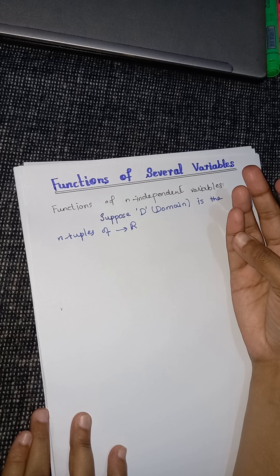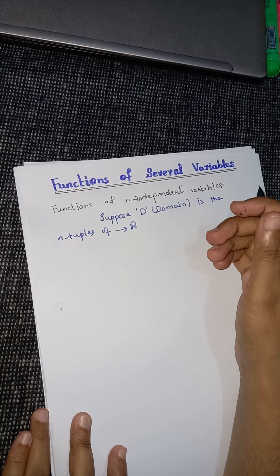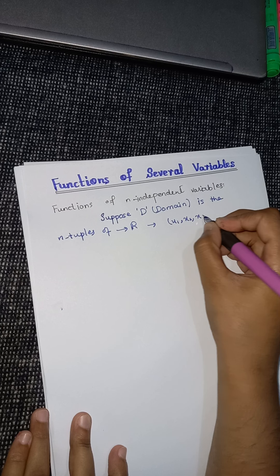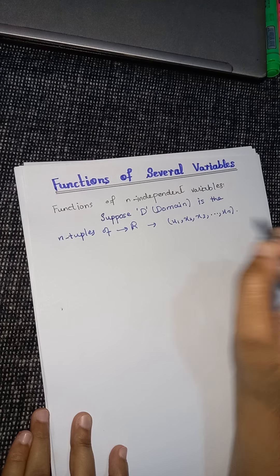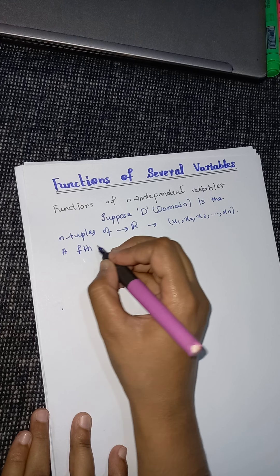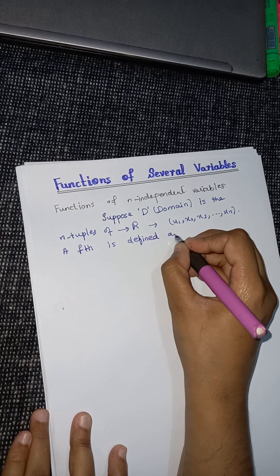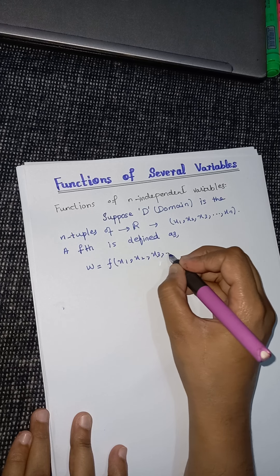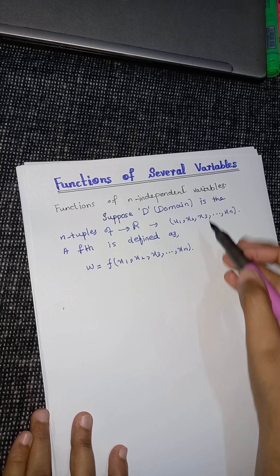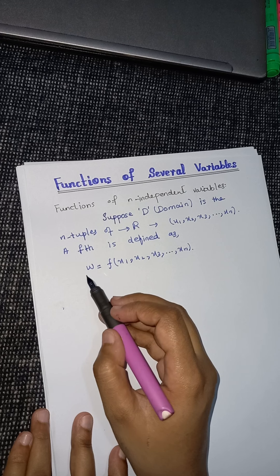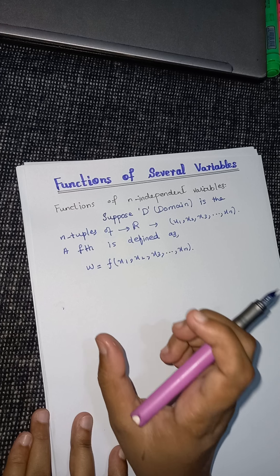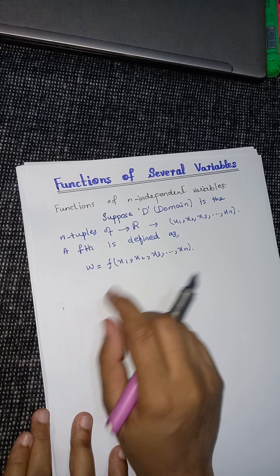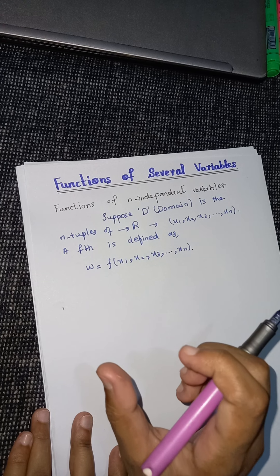Because if I use the total statement, then our video will get too much prolonged. The n-tuples of real numbers are like x₁, x₂, x₃, and so on up to xₙ. Then our function is defined as: w = f(x₁, x₂, x₃, ..., xₙ). All these n-tuples are independent variables and w is a dependent variable. This function is basically a rule that assigns a unique real number to each element in D.